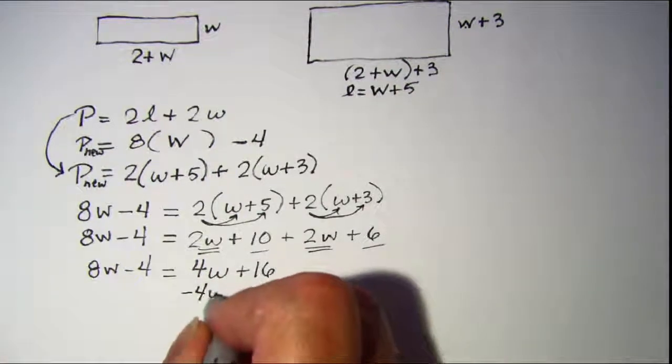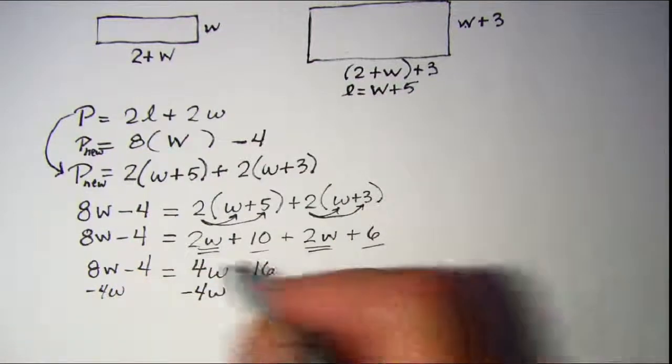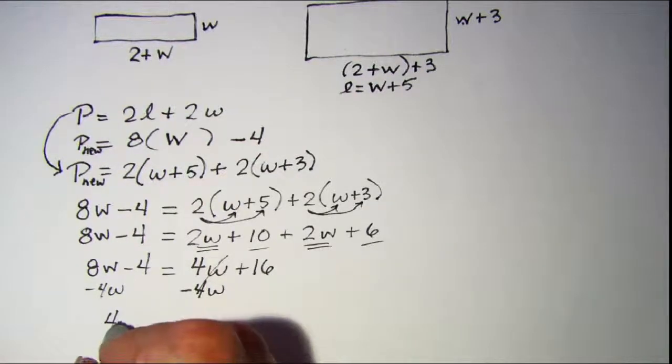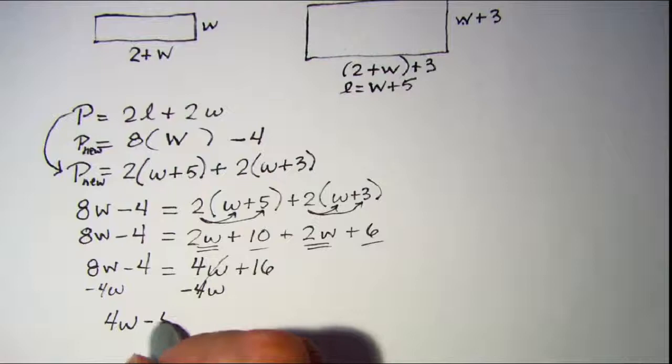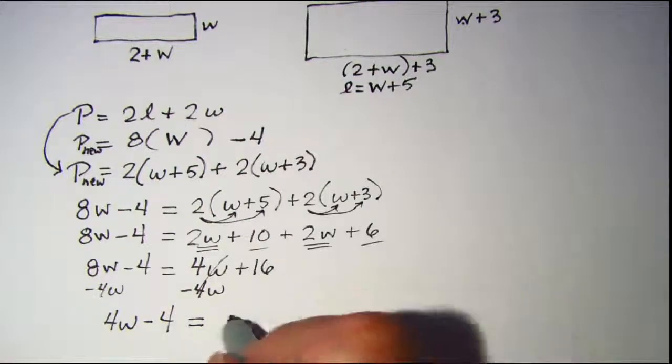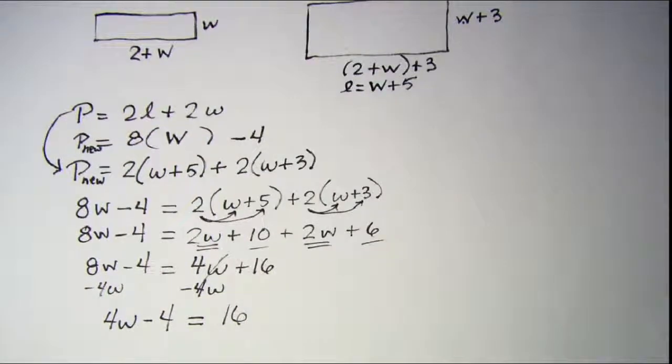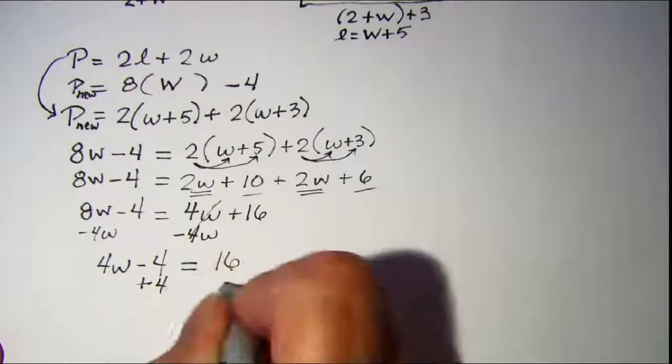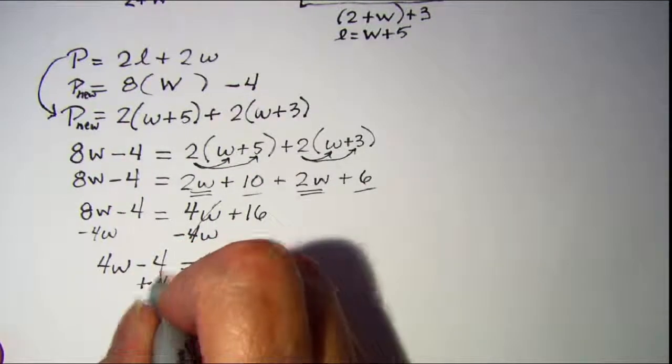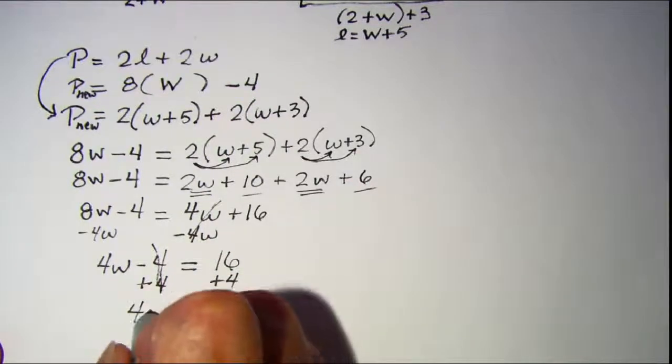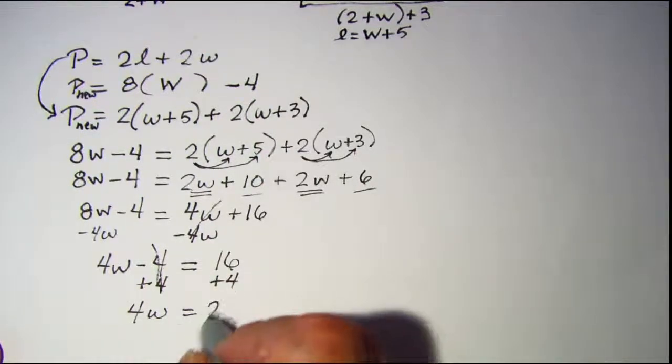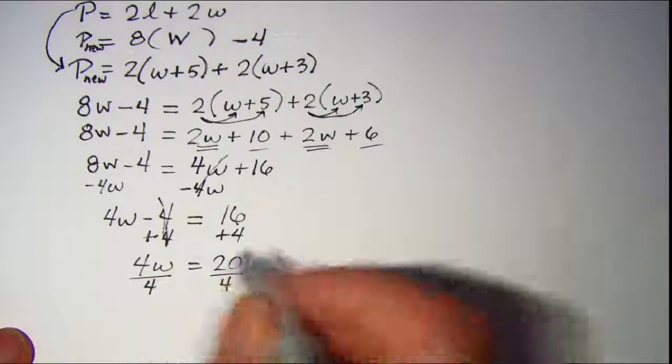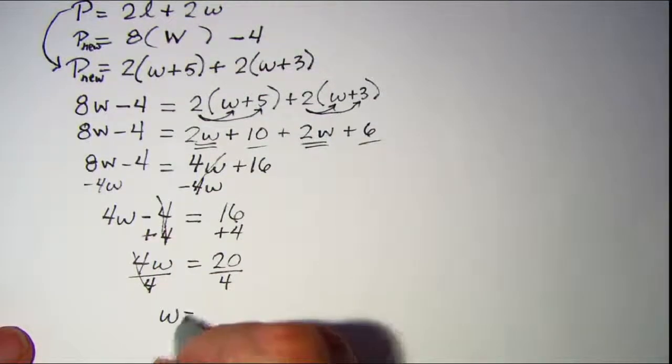Subtract 4w from both sides. These will cancel and 8w - 4w is 4w. Copy the minus 4, and on the right side I still have 16. Then we can add 4 to both sides. These will cancel, so 4w = 20. Divide both sides by 4 and w = 5.